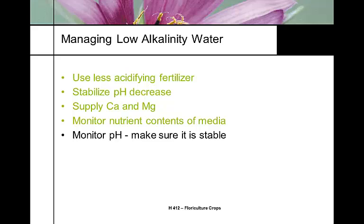One issue in the front range, especially with Denver water, is that Denver taps into many reservoirs with different parent material surrounding the runoff, so the water chemistry varies. They won't tell greenhouse growers which reservoir they're pulling from on a regular basis, so you have to test the water constantly. In Fort Collins, the supply is typically very consistent, coming from the Poudre River — except this summer when they switched to Horsetooth Reservoir due to fire runoff. They just switched back to the Poudre River last week.